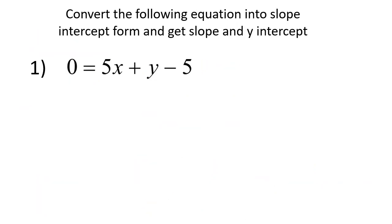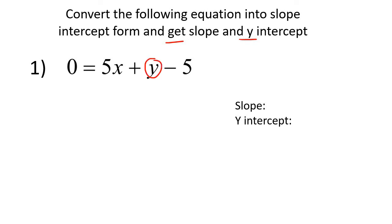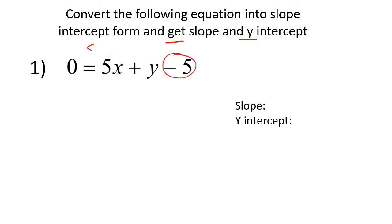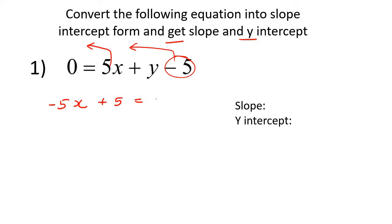Here's our first example. We have to convert it into slope-intercept form, and we also need to identify the slope and the y-intercept. Your goal is just to get the y by itself — you can get the y on the left or the right; it doesn't matter. I'm going to leave this y exactly where it is because it's already positive, and I'm going to take this 5x and this minus 5 to the left. When 5x goes to the left it becomes negative 5x, and when negative 5 goes over it becomes positive. On the right-hand side you're still left with y. The 0 doesn't do anything, so I ignored it — and so we have the equation in slope-intercept form.